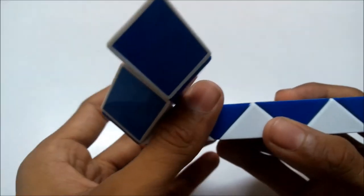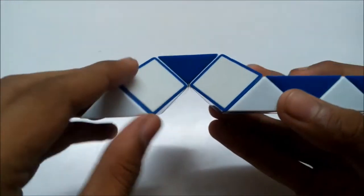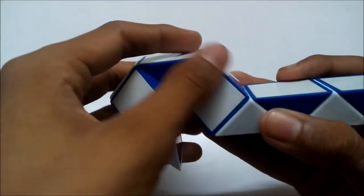Now bend these two triangles like this. Now join these two triangles by turning this triangle anti-clockwise and this one clockwise.